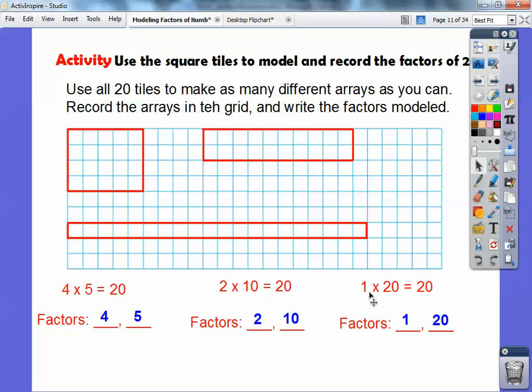And then, 1 times 20, one row of 20 columns. That also equals 20. There's 20 tiles in there, so 1 and 20 are factors of 20. So, all the factors listed in order, if I listed them from smallest to biggest, would be this 1, then this 2, then these 4 and 5, and then 10, and then 20. So, there's all the factors of 20 right there, okay?